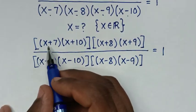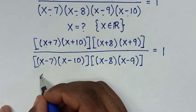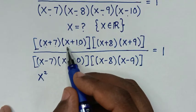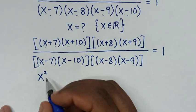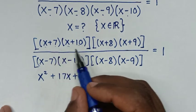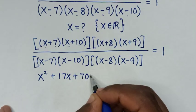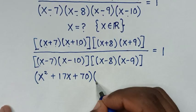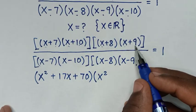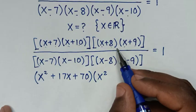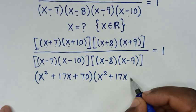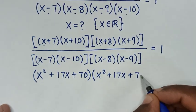By multiplying (x+7)(x+10): x times x is x squared, x times 10 is 10x, 7 times x is 7x, so 10x plus 7x gives plus 17x, then plus 7 times 10 is 70. Multiplying (x+8)(x+9): 9x plus 8x is plus 17x, then plus 8 times 9 is 72.